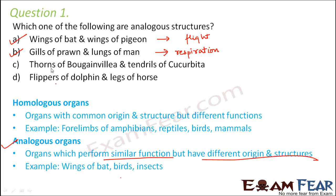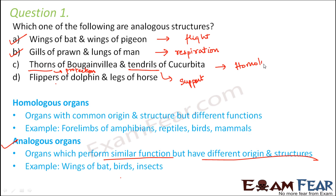Option three: thorns of bougainvillea and tendrils of cucurbita. Thorns and tendrils have different functions. Tendrils provide mechanical support and help the cucurbita plant to climb over different structures, whereas thorns help in protection. They have different functions, but they originate from the same axillary bud. Therefore, these are an example of homologous organs, not analogous.